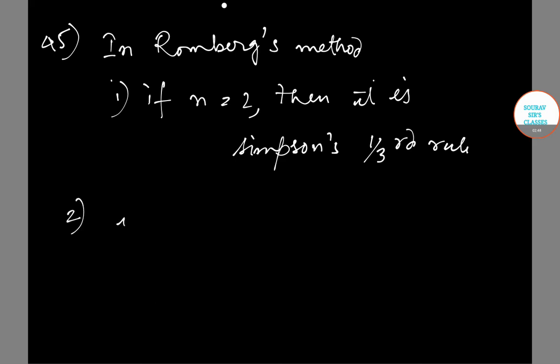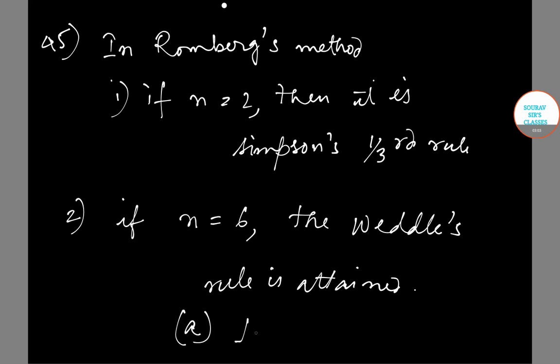And if n is equals to 6, then Waddle's rule is attained. So we can say that A is correct, that is only consideration one is right. Option A is the correct one here.